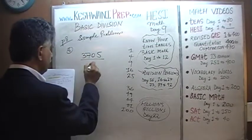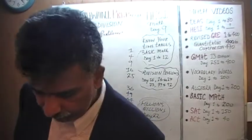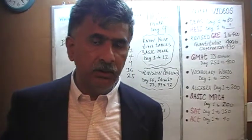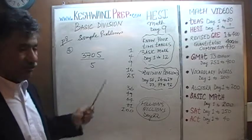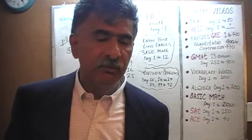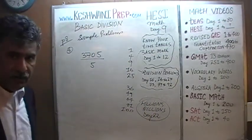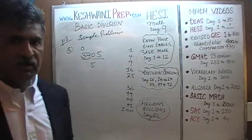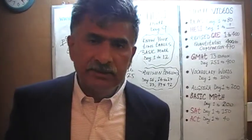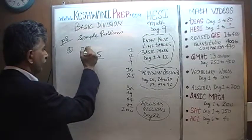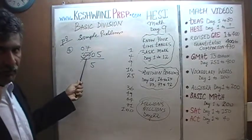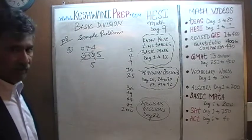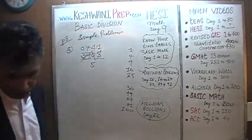Number 6: 3,705 divided by 5. Is 3,705 evenly divisible by 5? Yes — because the last digit is 5, and any number ending in 0 or 5 is divisible by 5. How many 5s does 3 have? None — so 3 joins 7 to make 37. 37 has seven 5s; 7×5=35, remainder 2. That 2 joins 0 to make 20; 20 has four 5s. Finally, 5 has one 5. The answer is 741.